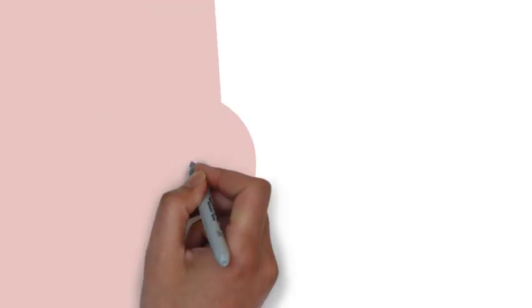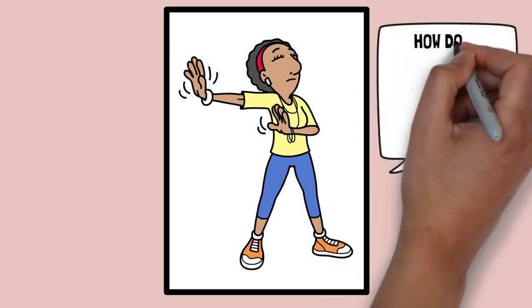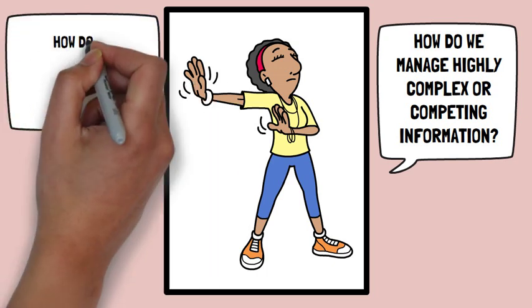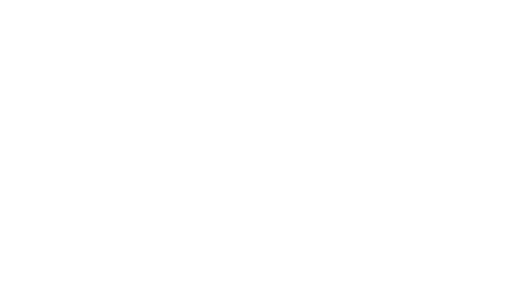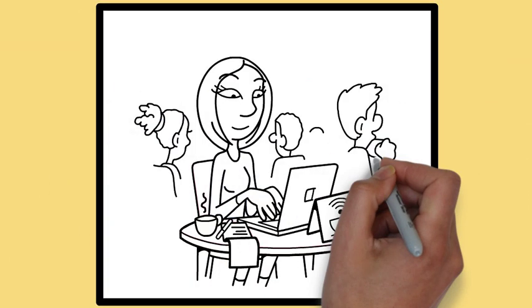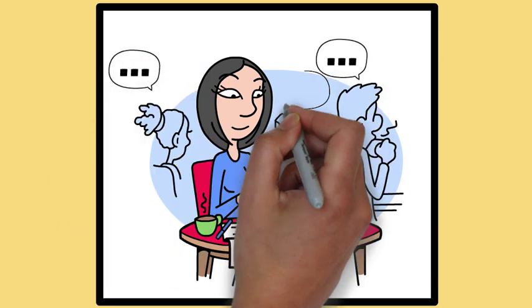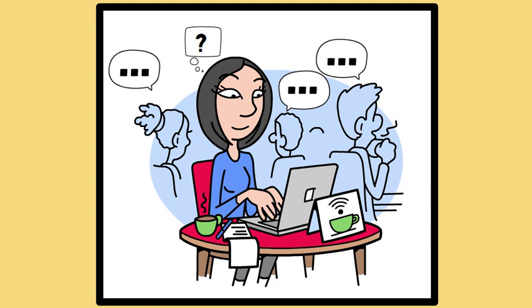While Treisman's theory provides valuable insights, it has limitations. It doesn't fully explain how we manage highly complex or competing information streams, and doesn't always clarify how we prioritize and integrate information from multiple sources. For example, if you are trying to follow multiple conversations in a noisy café, Treisman's theory might not fully address how we decide which conversation to prioritize and how to integrate information from various sources simultaneously.